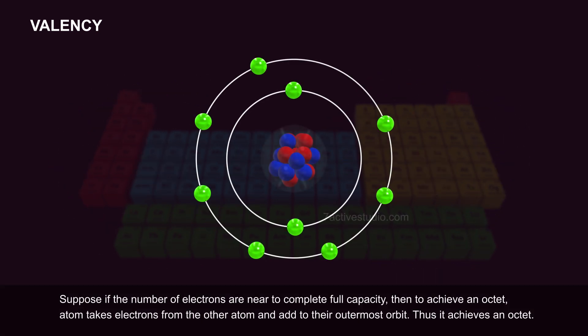Suppose if the number of electrons are near to complete full capacity, then to achieve an octet, the atom takes electrons from another atom and adds them to its outermost orbit. Thus it achieves an octet.